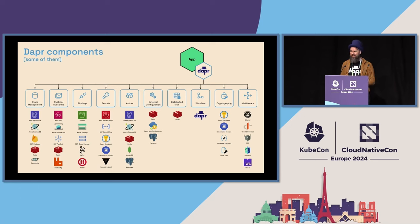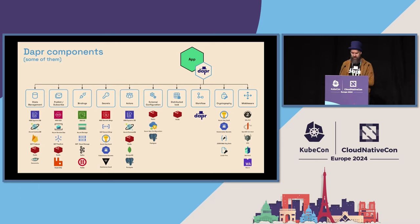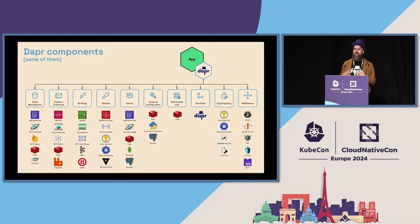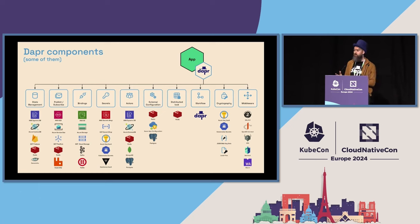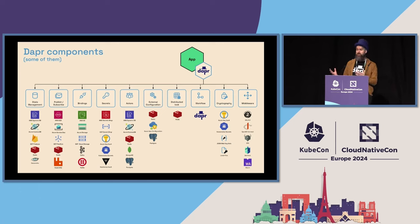Dapr's APIs are decoupled from the underlying infrastructure, so you can use the state management API in your program and then configure which underlying resource you use via component files. These are just YAML files that describe the type of component you're using. For local development you can use a local in-memory store, for instance, but when you push to production you can change one of these YAML files to use a